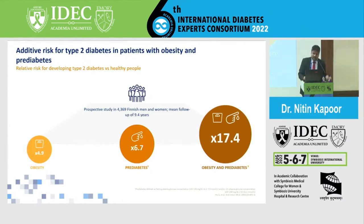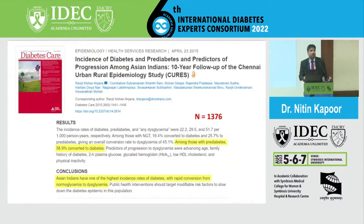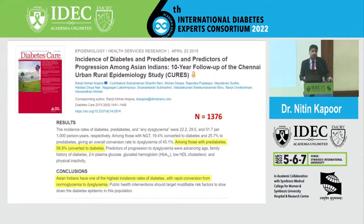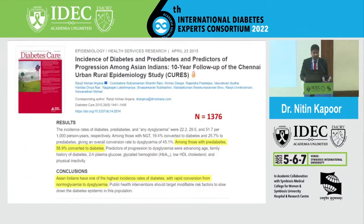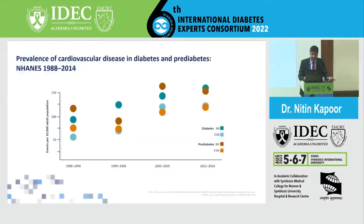We know that diabetes is a risk factor for cardiovascular disease, but pre-diabetes is also not as benign as it may sound. Especially for Indians — referencing a paper from Dr. Mohan's group — Indians in particular just zoom in from pre-diabetes to diabetes. The Western literature uses Finnish database data, but from an Indian perspective, our risks are probably much greater.